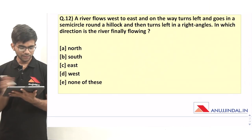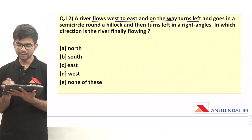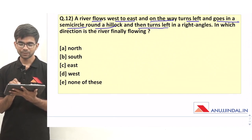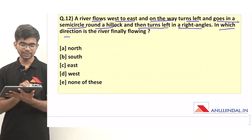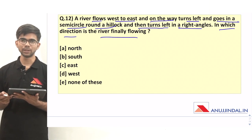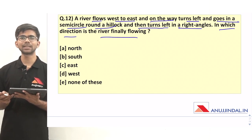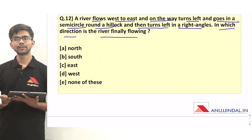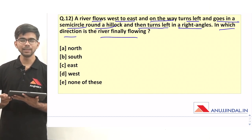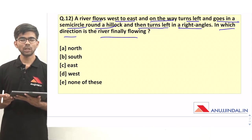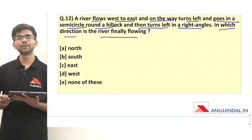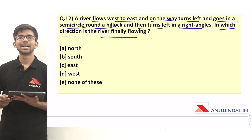A river flows west to east, on the way turns left and goes in a semicircle around a hillock, and then turns left in a right angle. In which direction is the river finally flowing? The answer to this question should be mentioned in the comment section below. I have tried to explain the concept of directions in a simple manner so you can solve these questions quickly. If you liked this video or learned something new, do subscribe to our channel. Work hard, prepare well for your RBI Grade B prelims. All the very best, have a nice day.